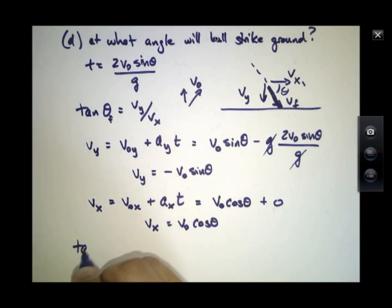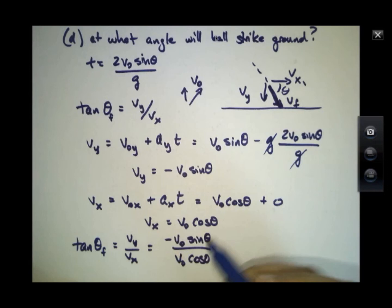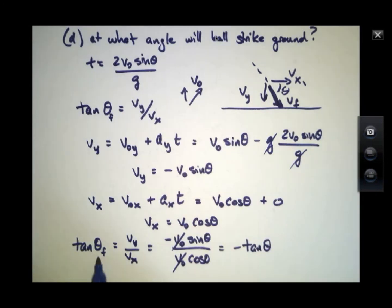This says that tangent theta at the end, the final tangent theta, if I take that ratio, this is minus V0 sine theta over V0 cosine theta. I'm just inserting for what Vy at the end is and Vx at the end would be. Notice that V0 is cancelled, and this is minus tangent theta. So when does this final angle have a tangent that's minus the initial angle? It happens when theta final is equal to minus the initial angle. In other words, the ball is heading down at the same angle as it was heading up.